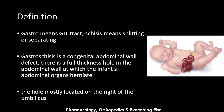Let's explain the term gastroschisis. Gastro refers to the GI tract, and schisis means splitting or separating. It is a congenital abdominal wall defect — a full thickness hole in the abdominal wall that allows the intestine and some other organs to herniate through it. The hole is mostly located on the right side of the umbilicus.